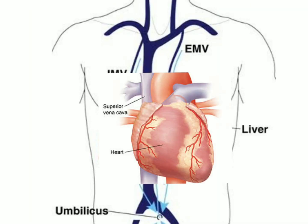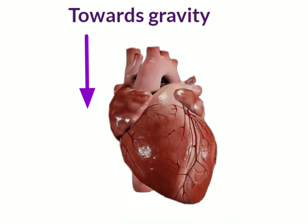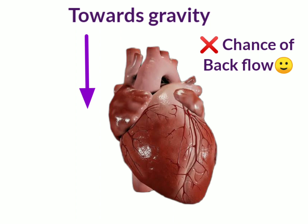The right atrium receives blood from two openings from the upper and lower parts of the body. The deoxygenated blood from the upper parts of the body is received by the superior vena cava, which opens into the right atrium. As the blood flowing through the superior vena cava moves by gravity, there is no chance of backflow.